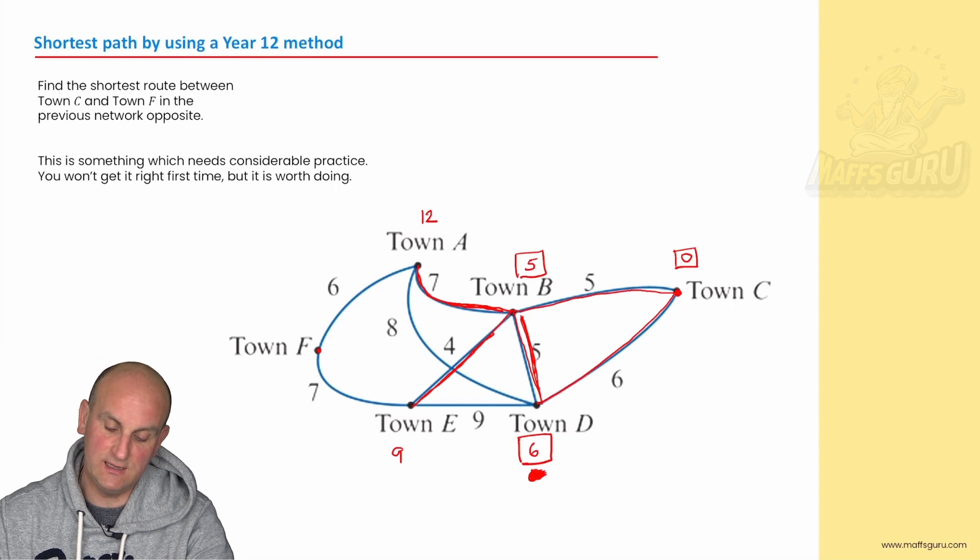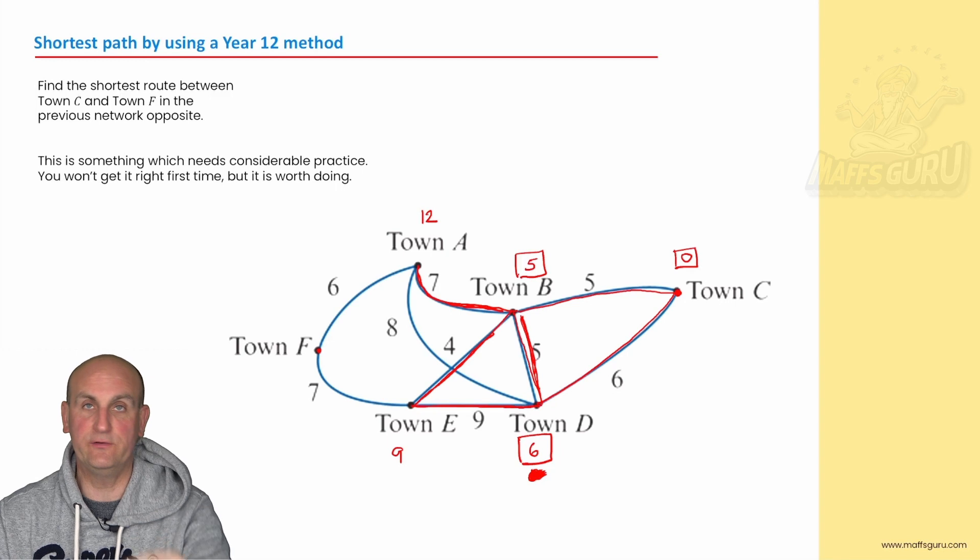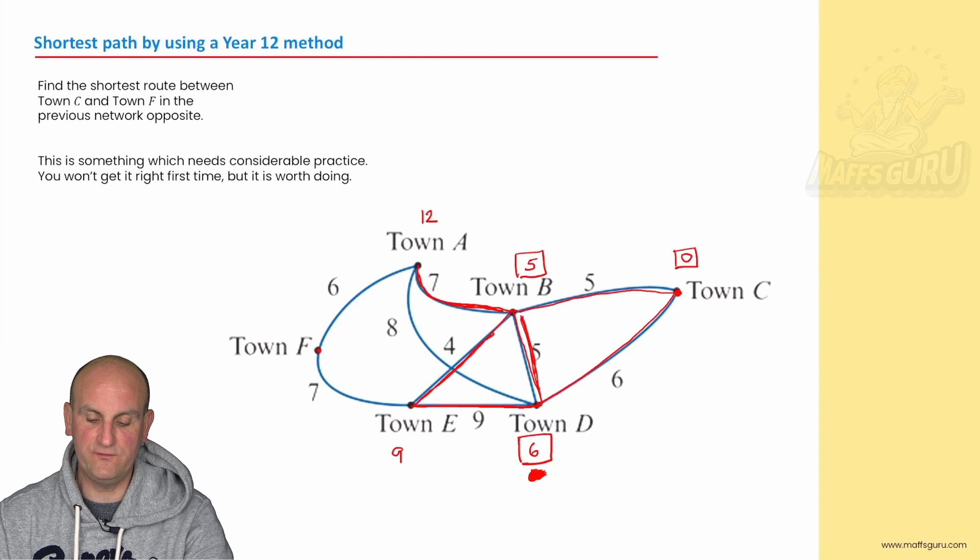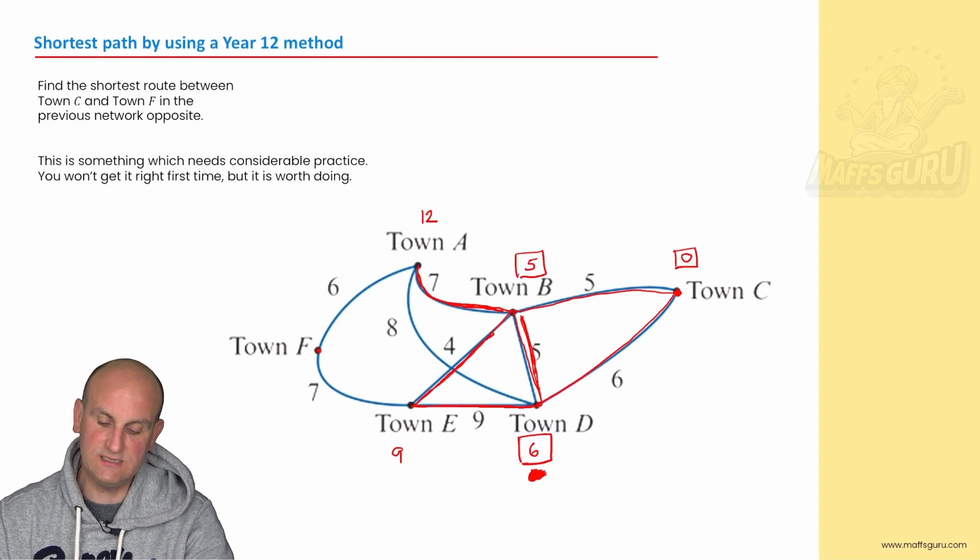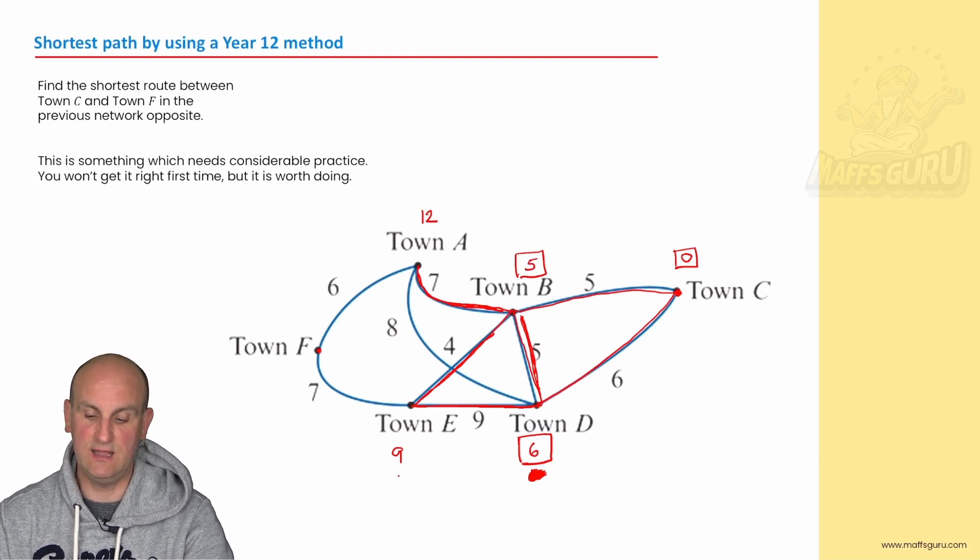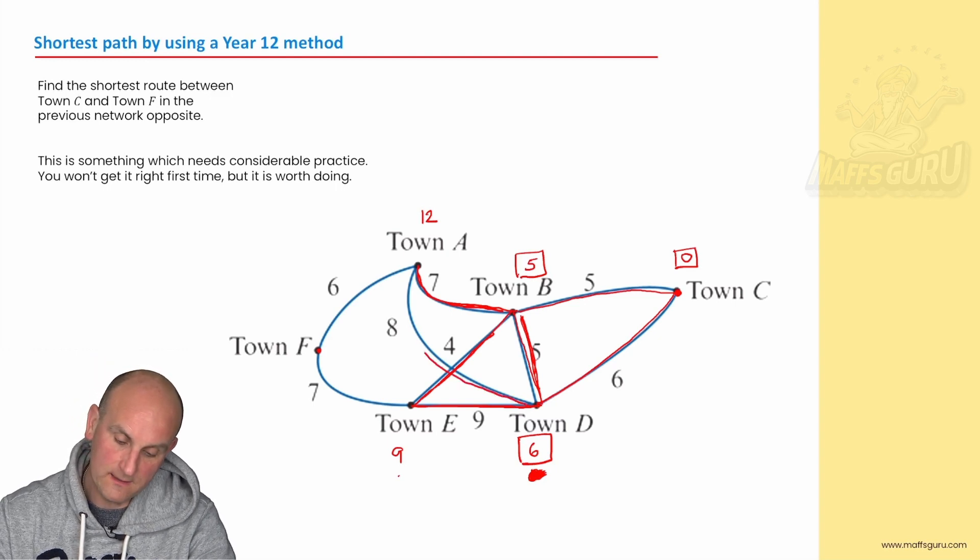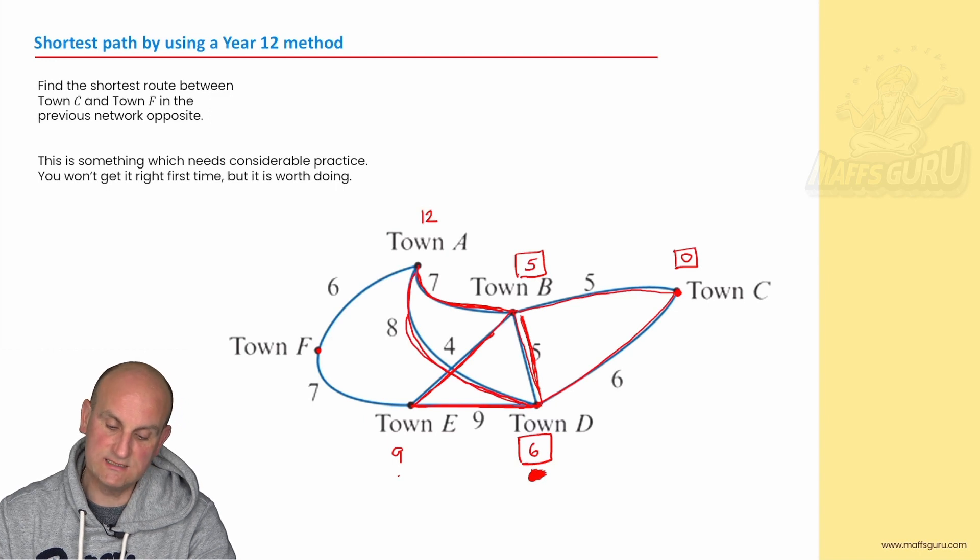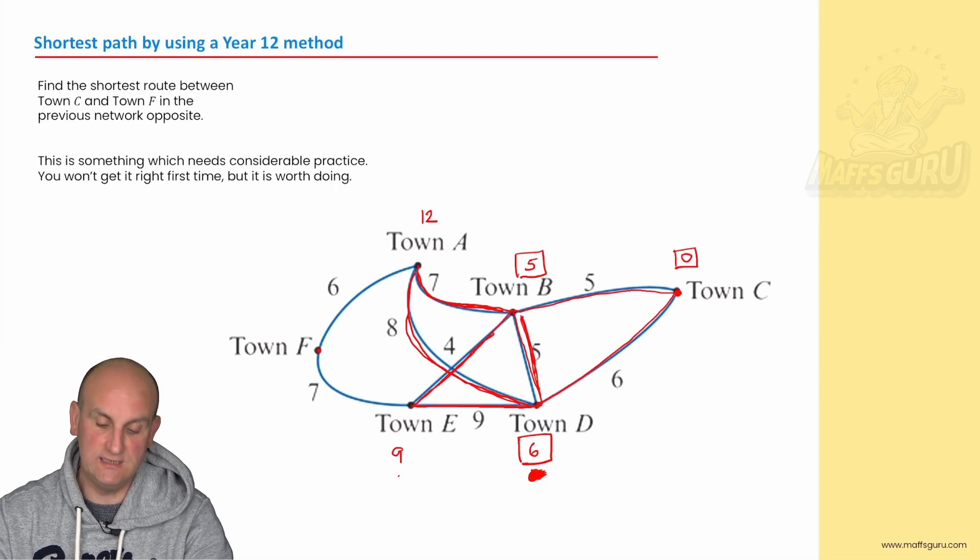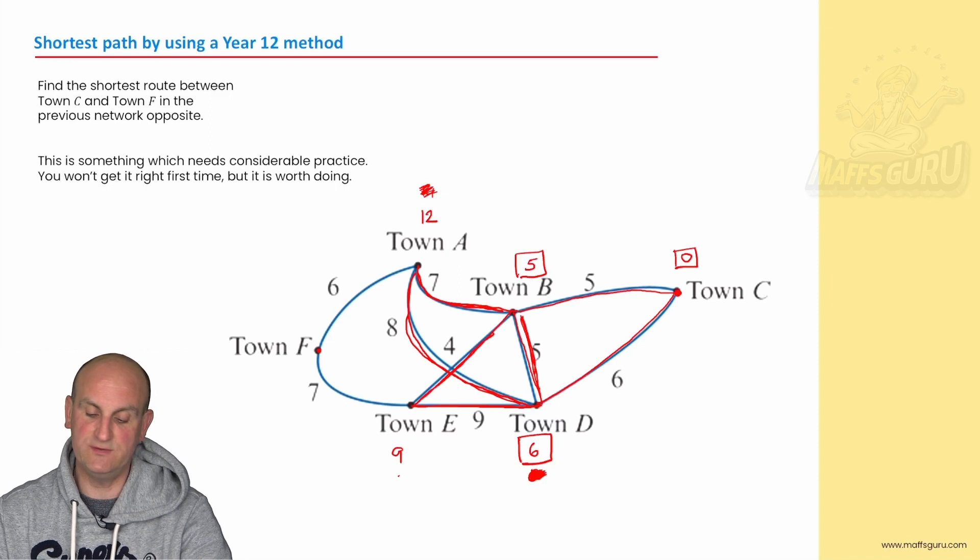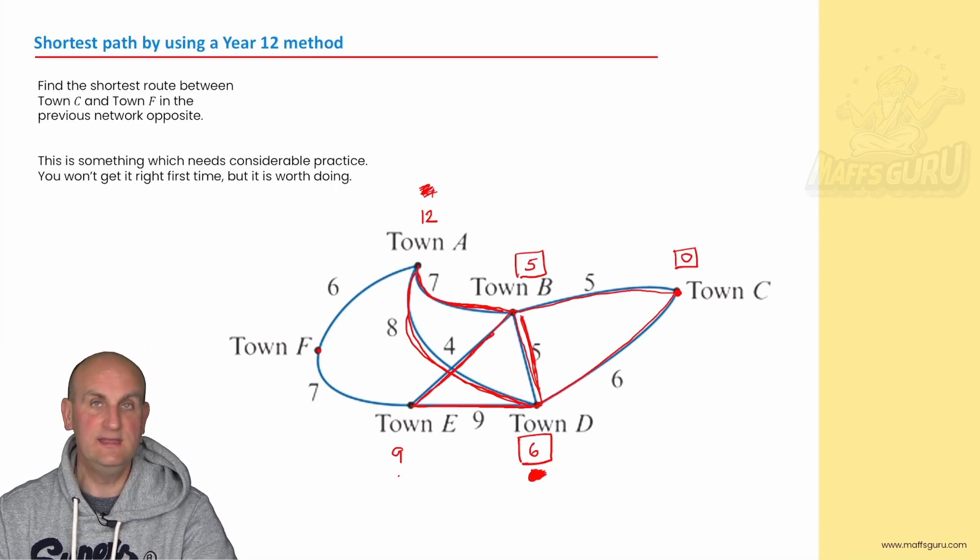So every town that now comes off of D, I'm going to go along here. So that's nine. I'm going to add it onto the six, which means that's going to be nine plus six is 15. Am I going to write the 15 down? No, because I can actually get to E in nine kilometers. It's much easier than that way. So no, that's not going to work. What about town D to town A? Well, it was six plus the eight, which is going to give me 14. Again, I'm not going to write the 14. I mean, I could write the 14 down, but then I'd have to scribble it through because the 12 is there. Have I exhausted all the towns coming off of D? Yes.